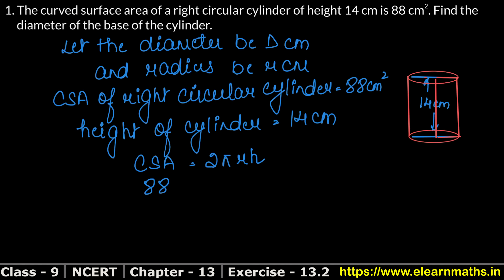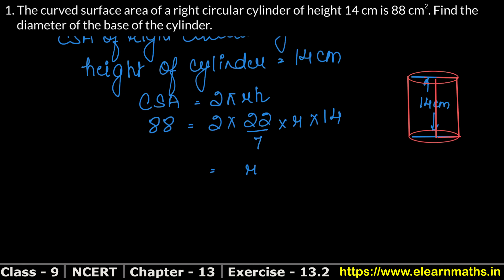We know the value of π is 22/7. So, 2 × (22/7) × r × h = 88. We write h as 14. Now R is on its own. 88 is on its own.